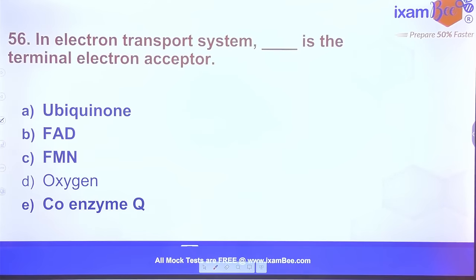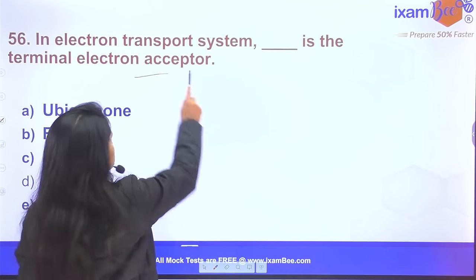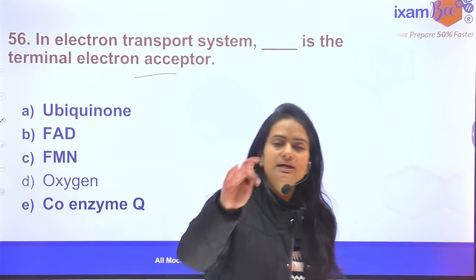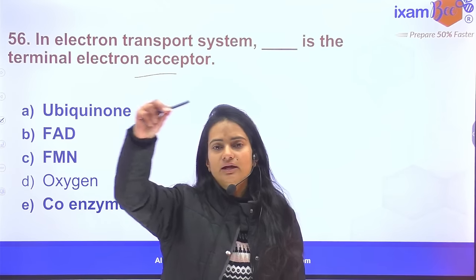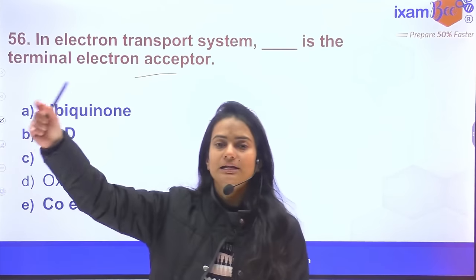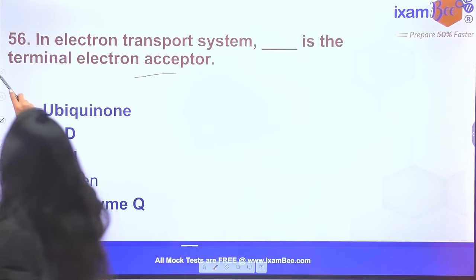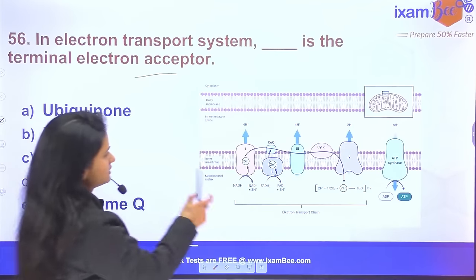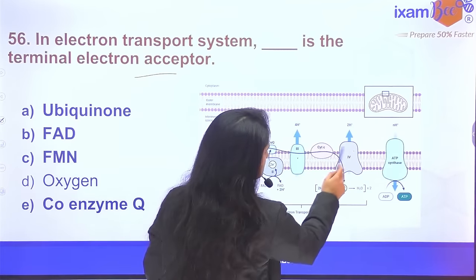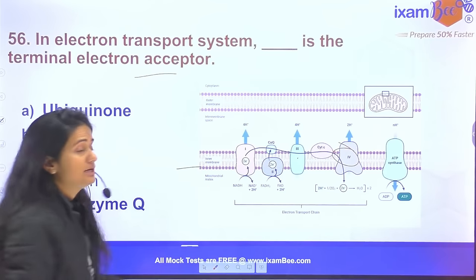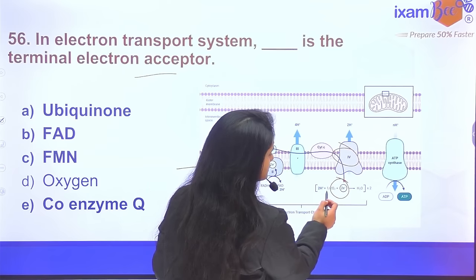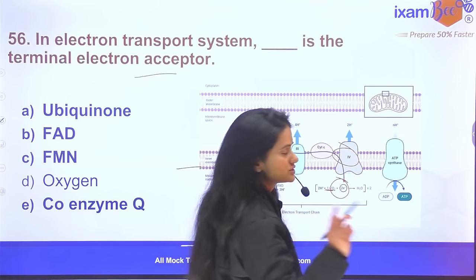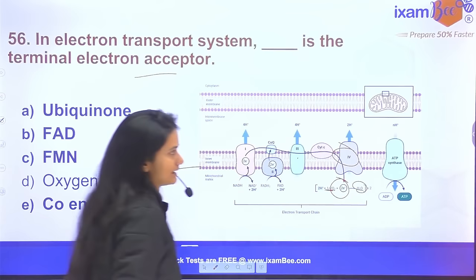Question 56: In the electron transport system (ETS), what is the terminal electron acceptor? The ETS has 4 complexes in the inner membrane of the mitochondria. Electrons ultimately combine with O₂ to form H₂O. So O₂ is the terminal electron acceptor. The fifth component is ATP synthase which synthesizes ATP.